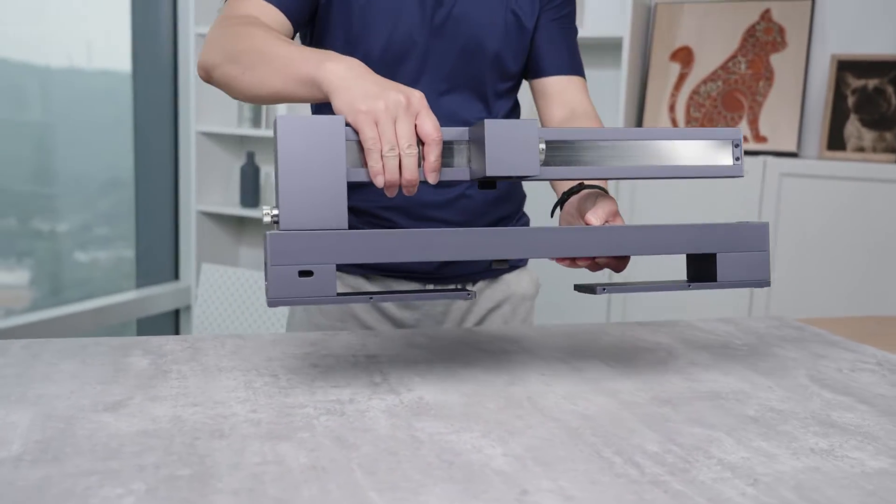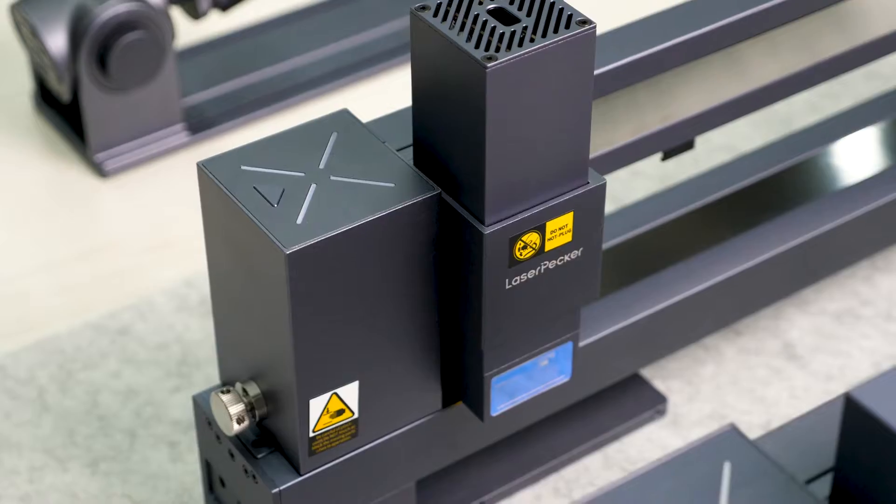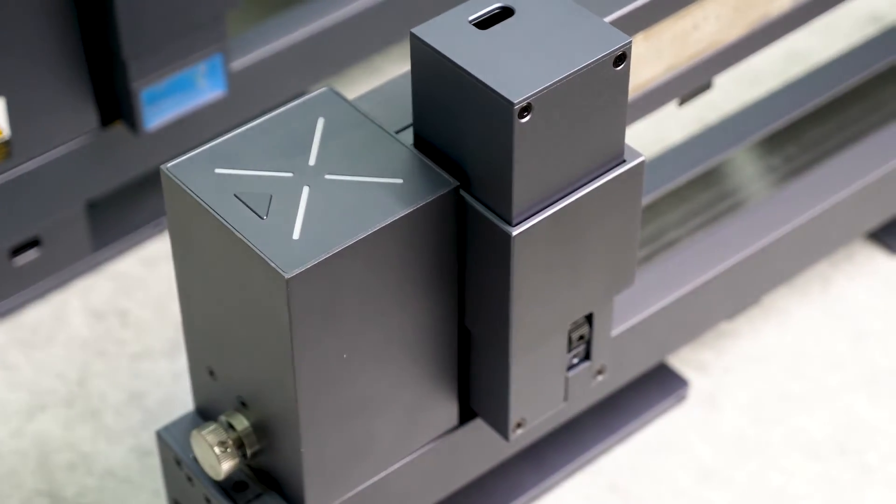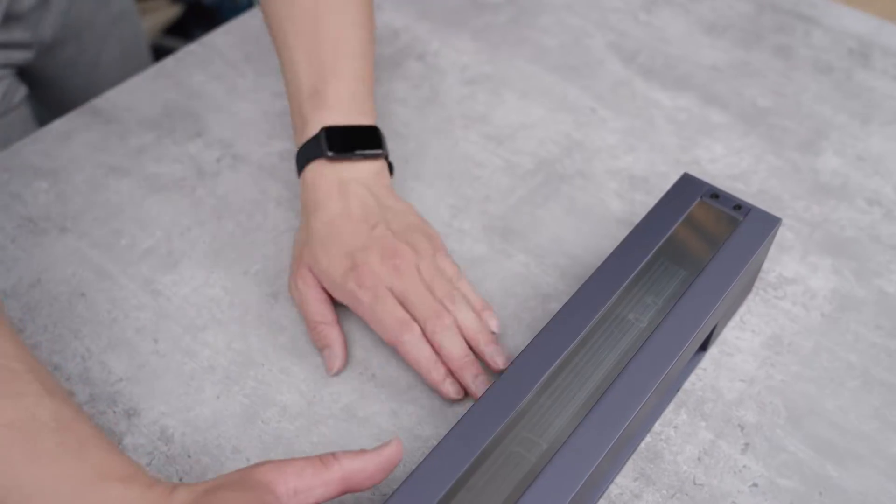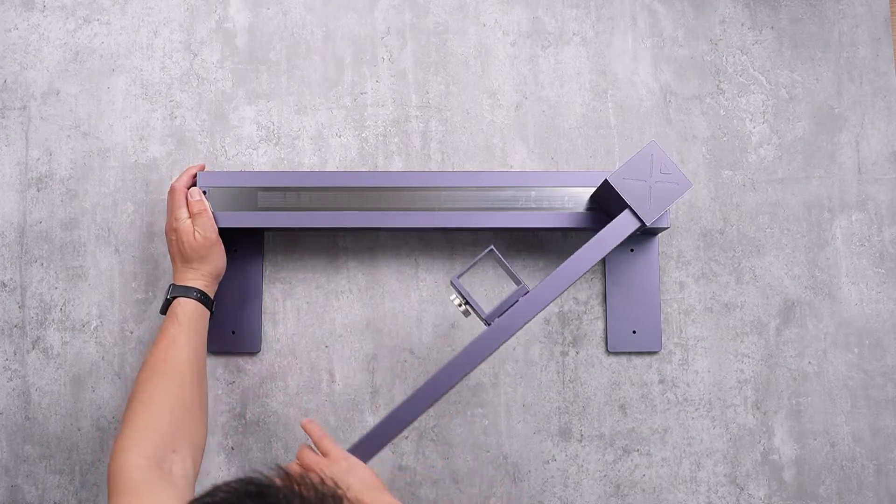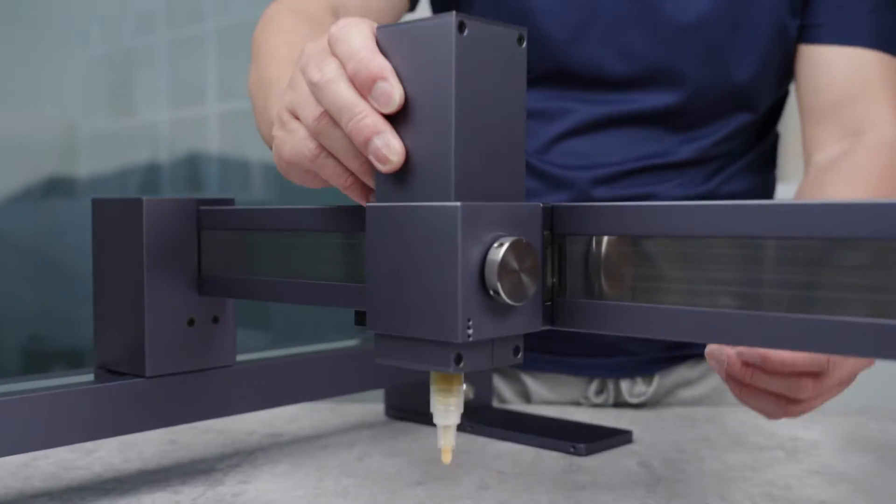Unlike normal Core XY laser engravers on the market, the LX1 is ready to use right out of the box, with no assembly required. All you need to do is extend the stands, unscrew and unfold the X-axis, and install the laser module of your choice.